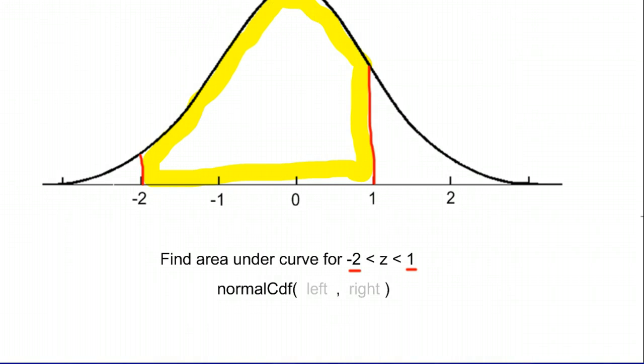What your calculator can do is, using a function called normalCDF, you can plug in the left edge, which in this case is negative 2, and plug in the right edge, which in this case is positive 1. And if you do that, your calculator will tell you exactly what area is under the curve. So normalCDF, negative 2, comma, 1 is what we're going to type in.